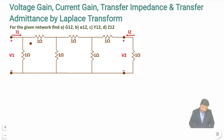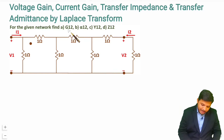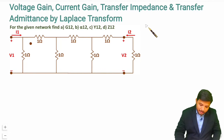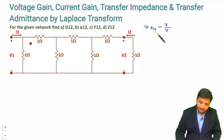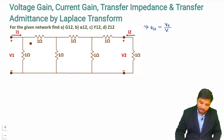Here you see we are having G12. G12 is voltage gain. Voltage gain means V divided by V, and the subscript 12 means the second digit is in the numerator and the first digit is in the denominator. So G12 is V2 by V1.